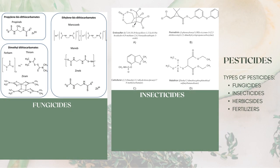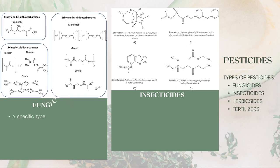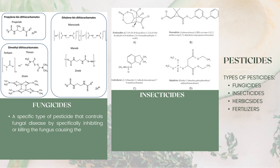There are several functions and important components of chemical structure for pesticides. First, fungicides — a specific type of pesticide that controls fungal disease by specifically inhibiting or killing the fungus causing the disease. The important compounds are dithiocarbamates and copper oxychloride, and there are different compounds of fungicides made from dithiocarbamates, as seen in the picture.